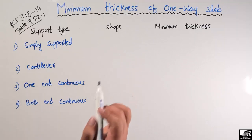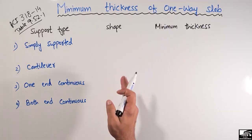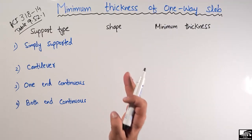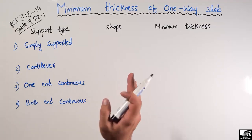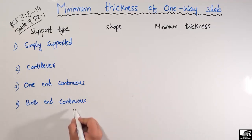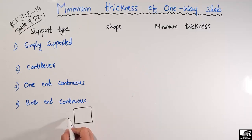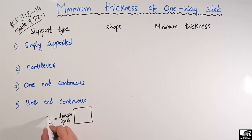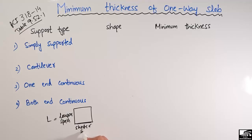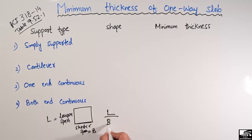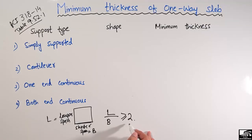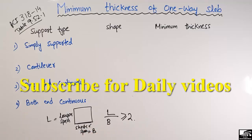It should be kept in mind that a one-way slab means that when the ratio of the longer span to the shorter span is greater than or equal to two, then it is known as a one-way slab. Let's consider a slab where the longer span is represented by L and the shorter span by b. When L/b ≥ 2, it is a one-way slab; otherwise, if it is less than two, it is a two-way slab.